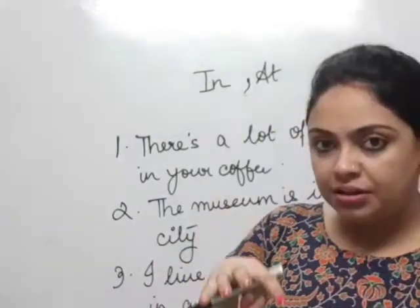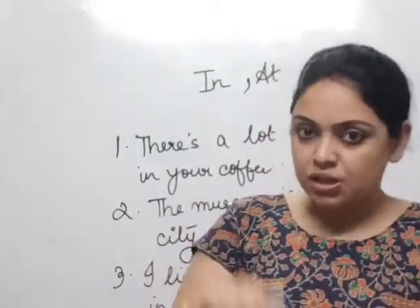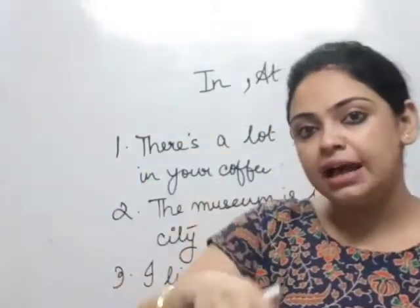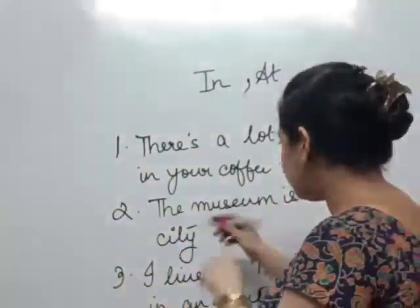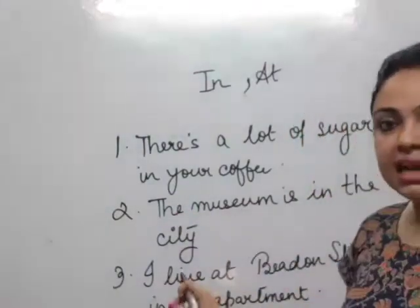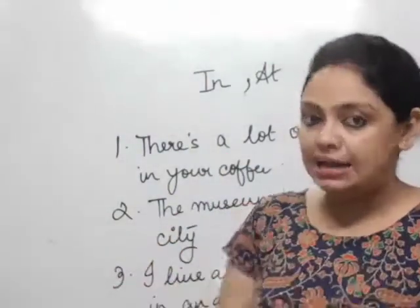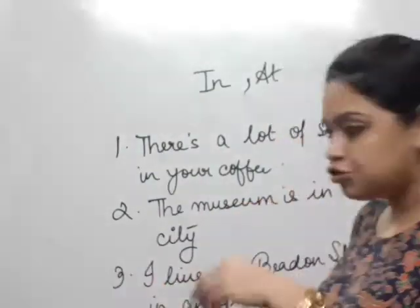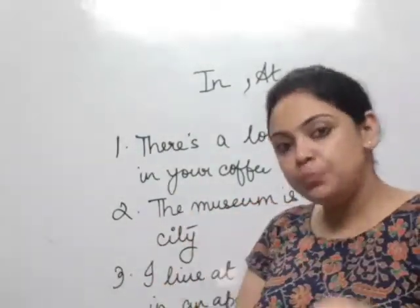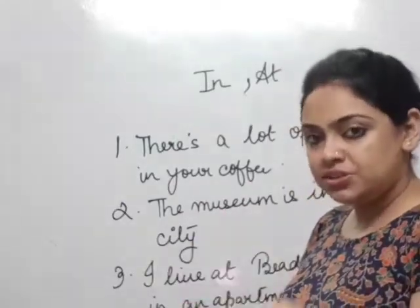Or maybe there are a lot of chilies in the sauce. So "in" shows the exact inside of something. The museum is in the city — not on the city or at the city, but in the city — showing that within the enclosure of the city, the museum is located or situated there.